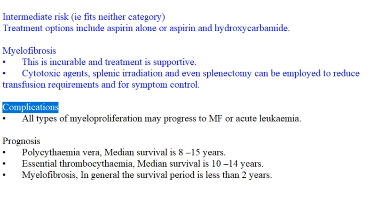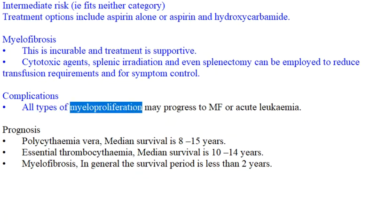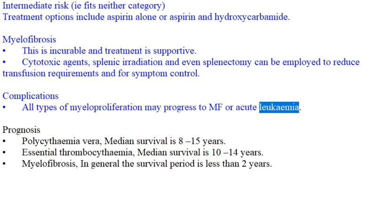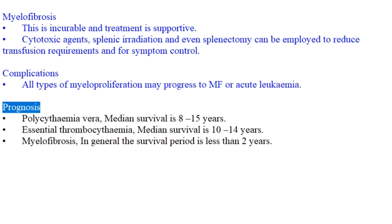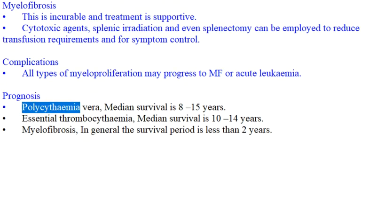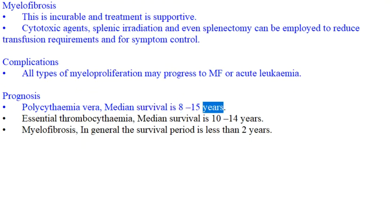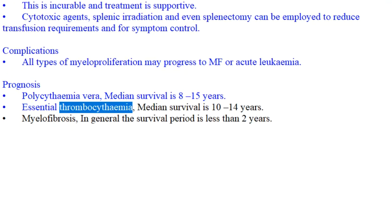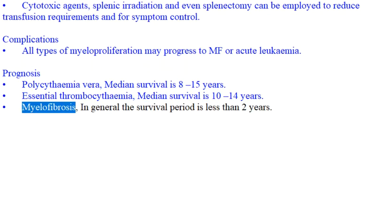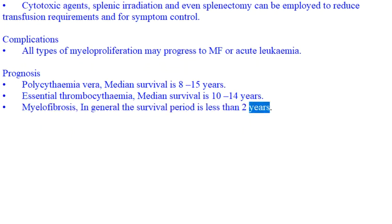Complications: All types of myeloproliferation may progress to MF or acute leukemia. Prognosis: Polycythemia vera — median survival is 8–15 years. Essential thrombocythemia — median survival is 10–14 years. Myelofibrosis — in general the survival period is less than 2 years.